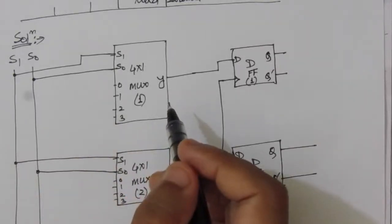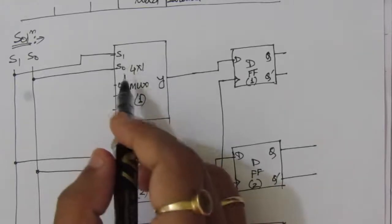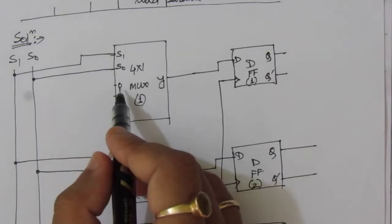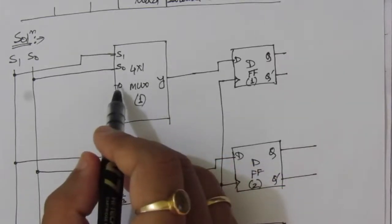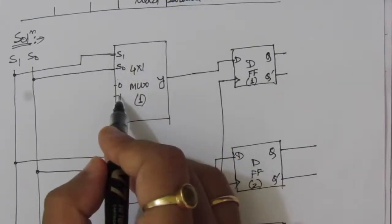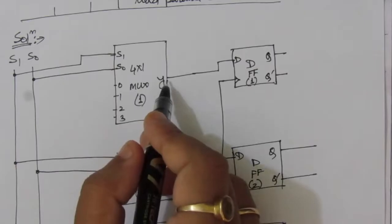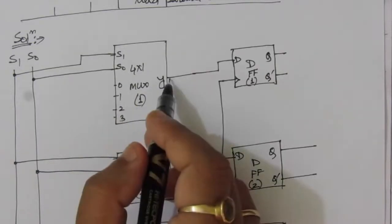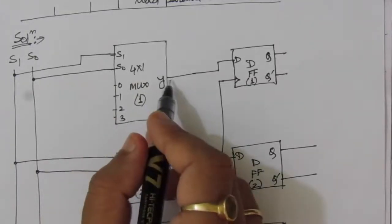The operation of the multiplexer is such that depending on the selection lines, one of the input ports is connected to the output. When the selection line is 00, input port 0 is connected to output Y. When the selection line is 01 (S1=0, S0=1), input port 1 is connected. When S1=1 and S0=0, input port 2 is connected to the output. And when S1=1 and S0=1, the content of input port 3 is transferred to the output.